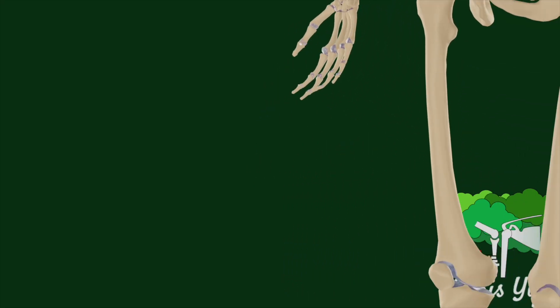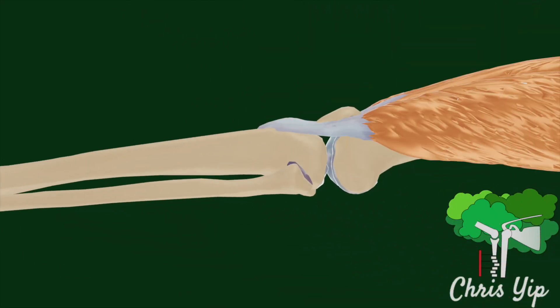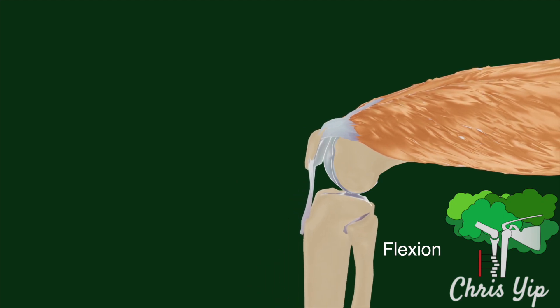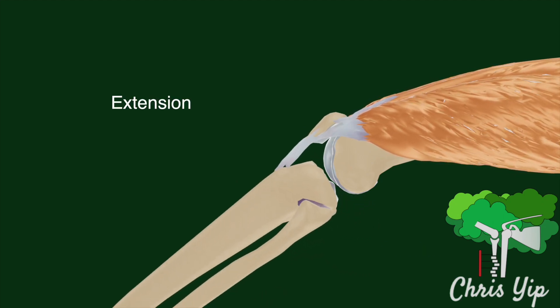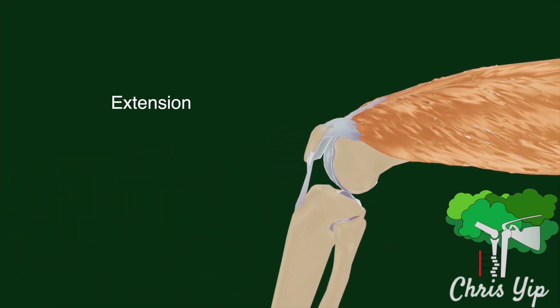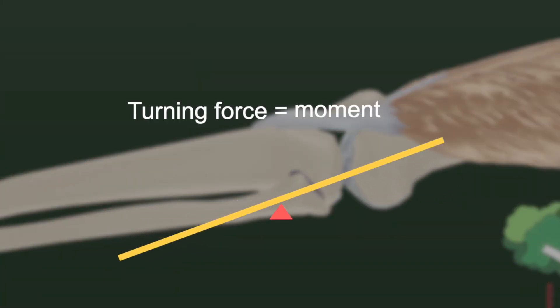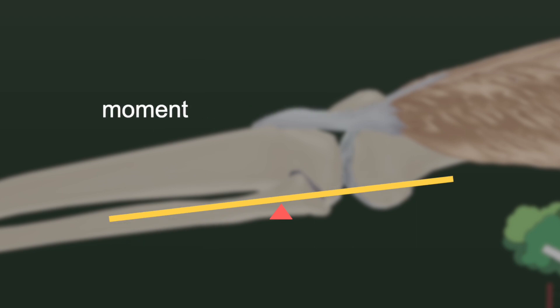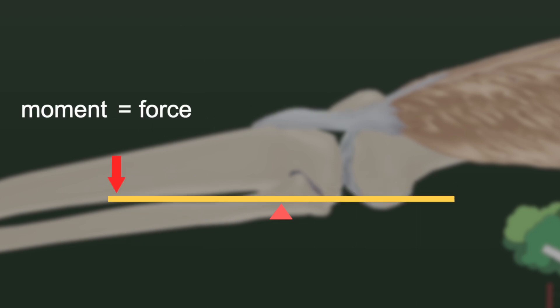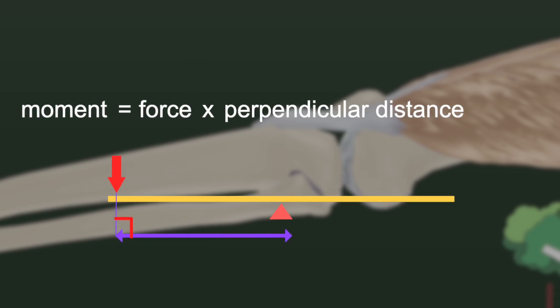An underrated function of the patella is its role in facilitating the extension mechanism of the knee. To understand extension we must go through some basic physics to learn about levers. Levers rotate due to an imposed turning force, which is called a moment. To calculate the moment of a force, one must measure the force exerted and the perpendicular distance from the line of action of the force to the pivot.